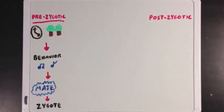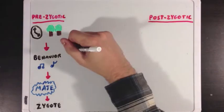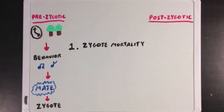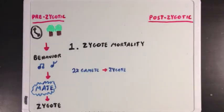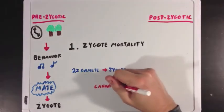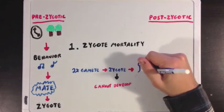Once the zygote has been formed, you can move on and look at postzygotic forms of reproductive isolation. The first form is zygote mortality, and this occurs when, even if the two gametes from the two organisms can fuse successfully and form a zygote, that zygote would have a high mortality rate and be unable to develop into a mature offspring.